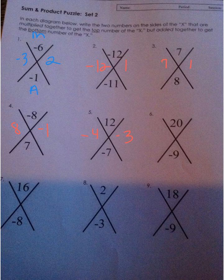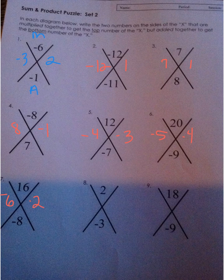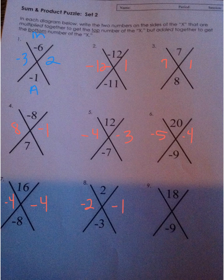Multiply to get me to 20 and add to get me to negative 9: negative 5 and negative 4. Multiply to get me to 16, add to get me to negative 8: negative 4 and negative 4, since negative 6 times negative 6 would be 36, not 16. And then negative 2 and negative 1, and negative 6 and negative 3.